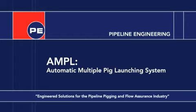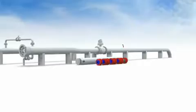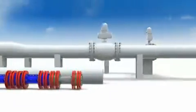Ample is an automatic multiple-pig launching system that minimizes the number of times a trapdoor has to be opened to access pipelines for pigging. This makes it particularly beneficial for unmanned platforms, isolated launch sites, subsea pigging, or high-frequency pigging.